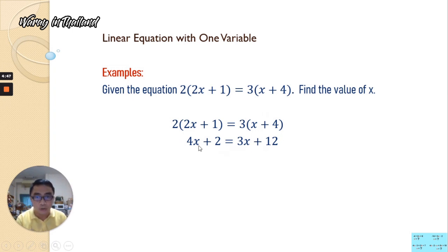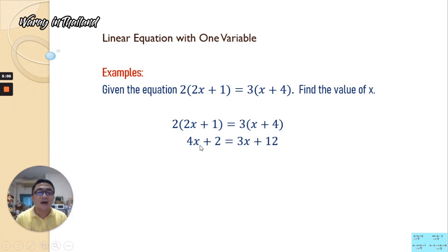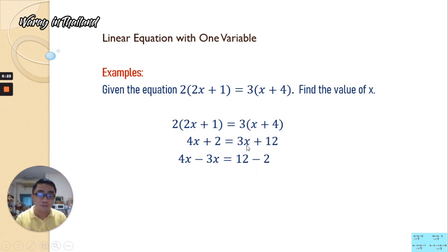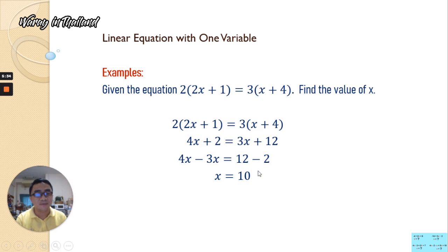Now we have all the expressions without rational expressions. We put all the x's on one side and all the numbers on one side. Since 4x is greater than 3x, we transpose 3x to the left side together with 4x so that x will be positive. We have 4x minus 3x, and we transpose positive 2 to the right side — it becomes negative 2. Combining like terms: 4x minus 3x is x, and 12 minus 2 is 10. Therefore, the value of x is equal to 10.